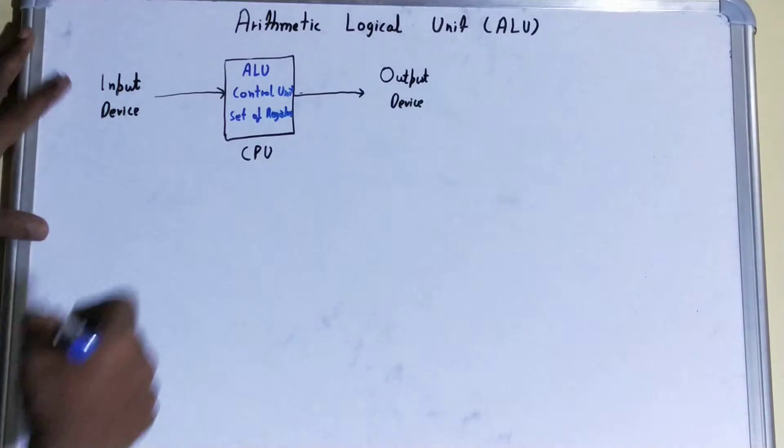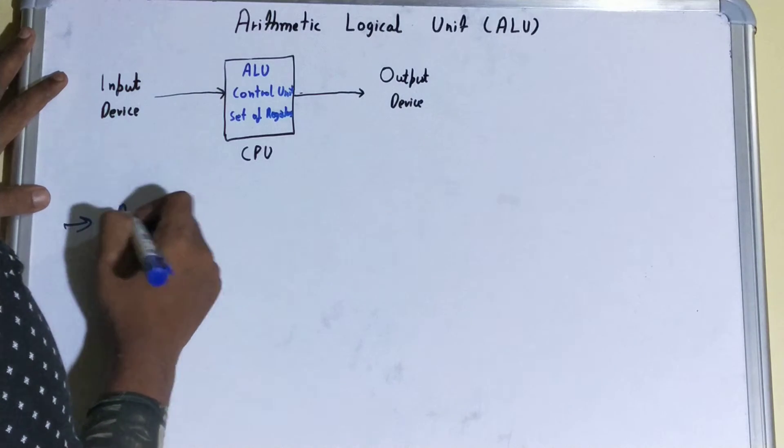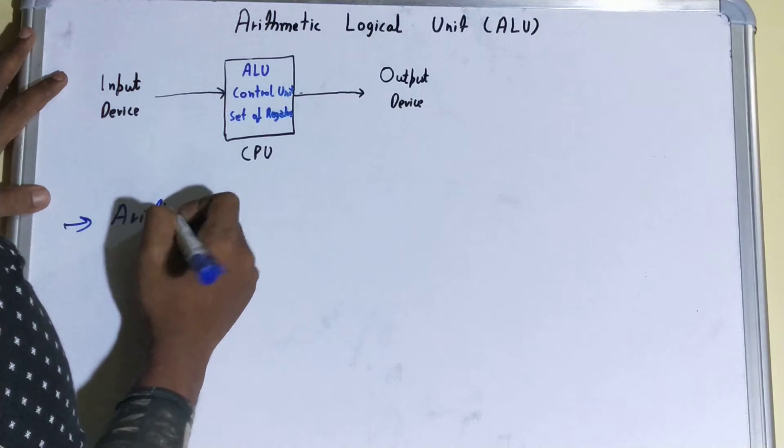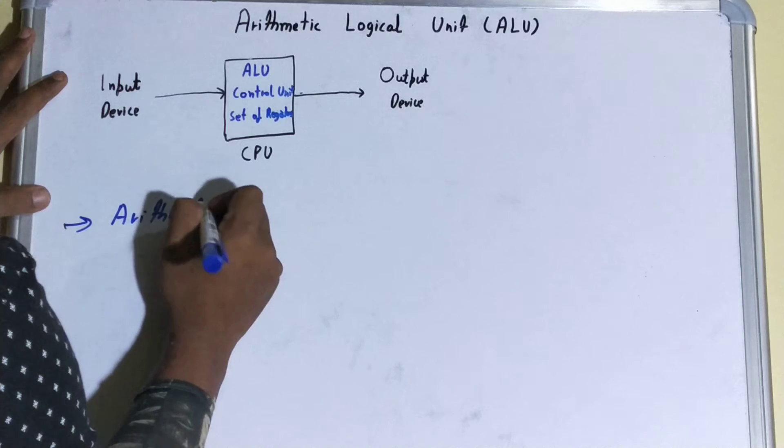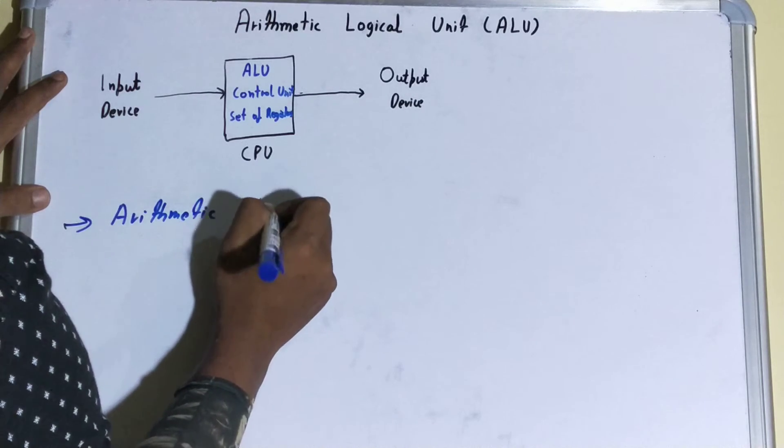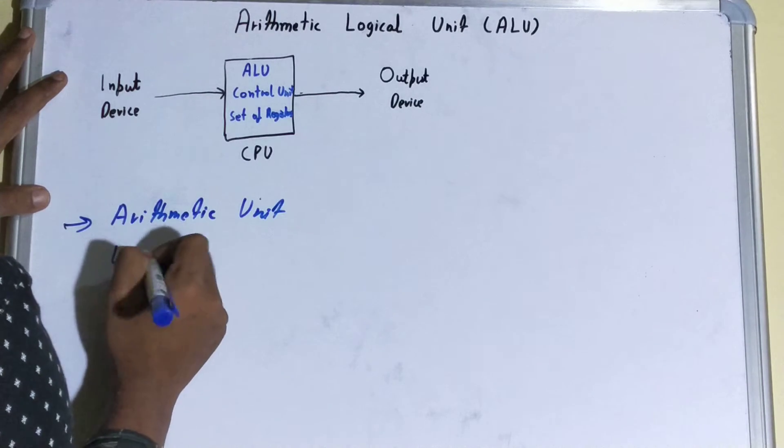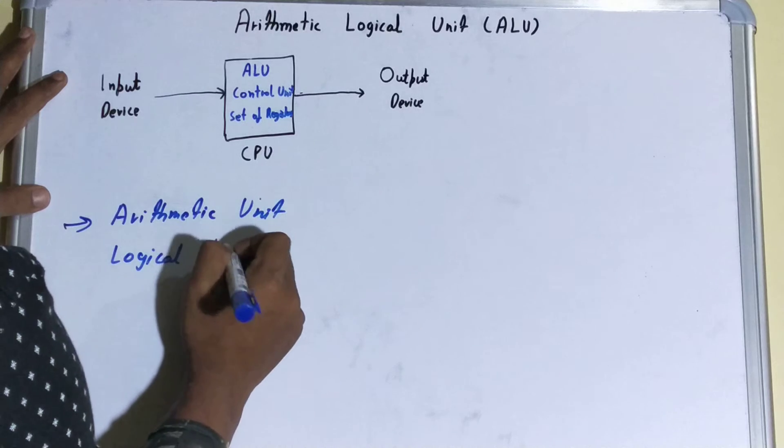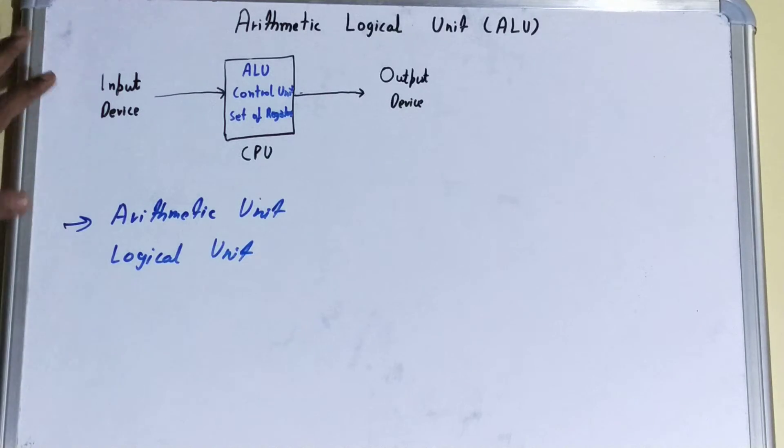That's why its name is Arithmetical Logical Unit. And if we talk about its units, it contains two units: first is Arithmetic Unit and second is Logical Unit.